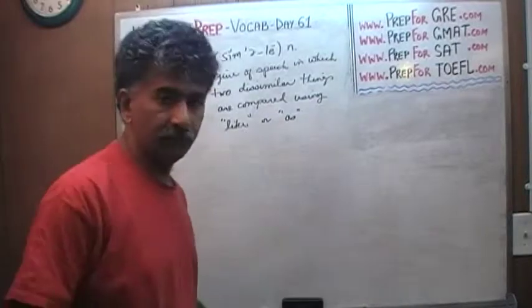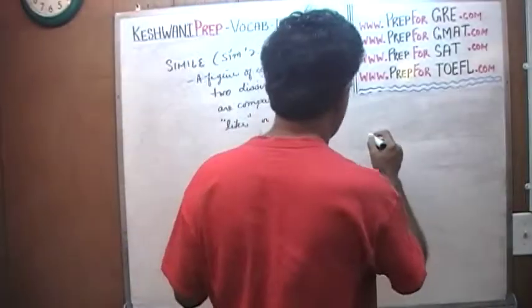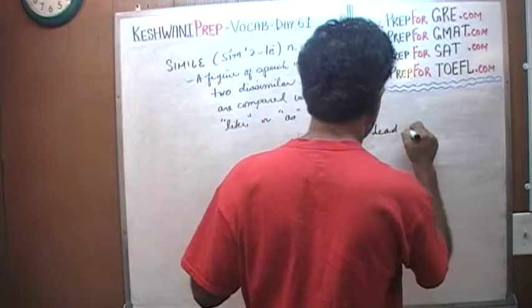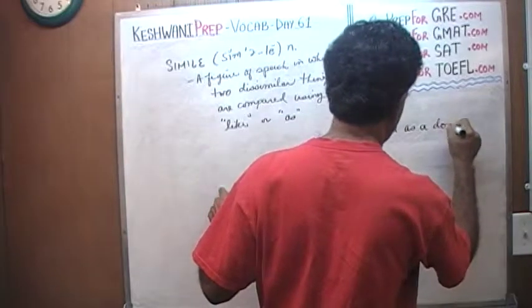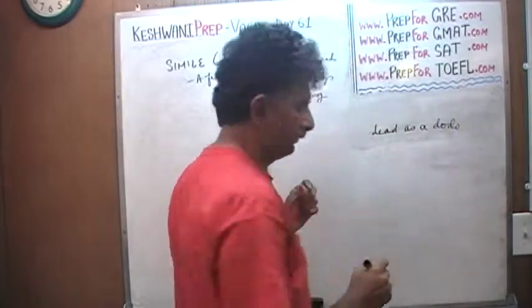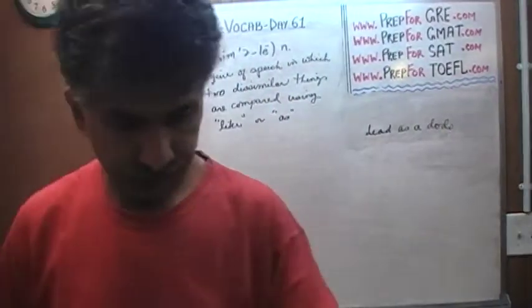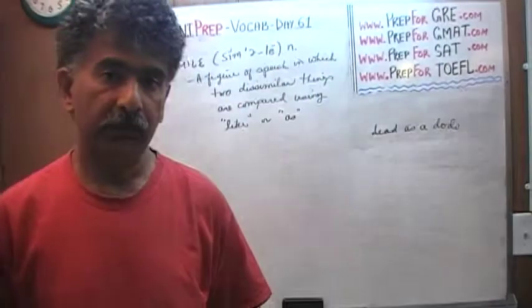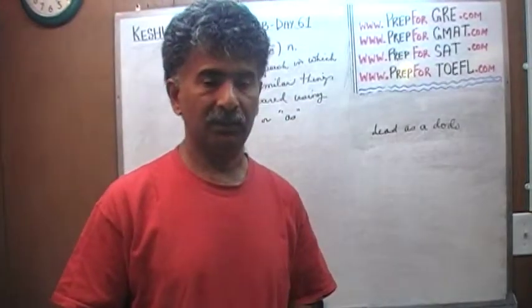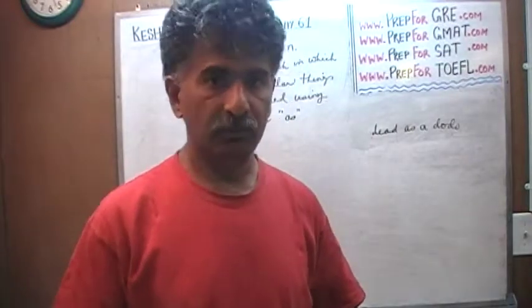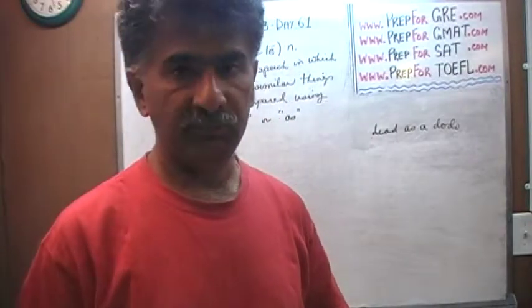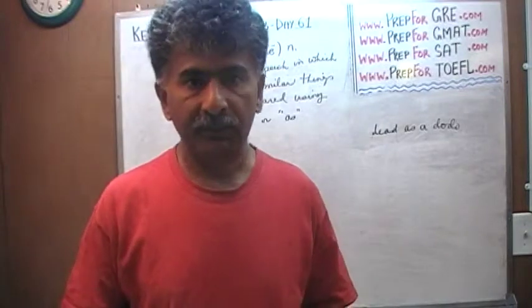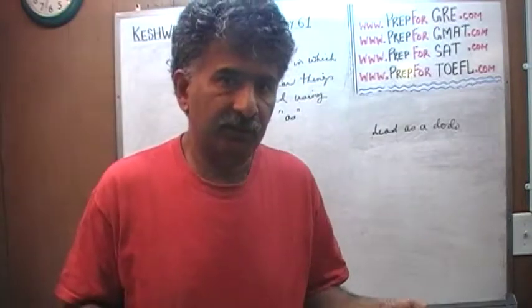Another example: 'she is dead as a dodo.' You may have heard this expression. A dodo is a bird which no longer exists — it's extinct. And because it is extinct, hence the expression 'dead as a dodo.'